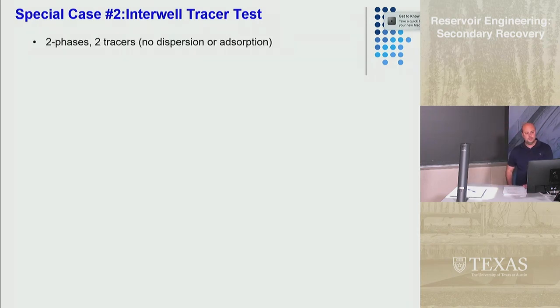One way to determine that is to do an interwell tracer test. What do we mean by interwell? It means two wells. We go from an injector well to a producer well and this is two phases so you'll have an aqueous phase and an oleic phase and you'll inject two different tracers. The goal of that is to determine the residual oil saturation. This is probably the end of a water flood where you believe you're at residual oil saturation and you want to determine what that is.